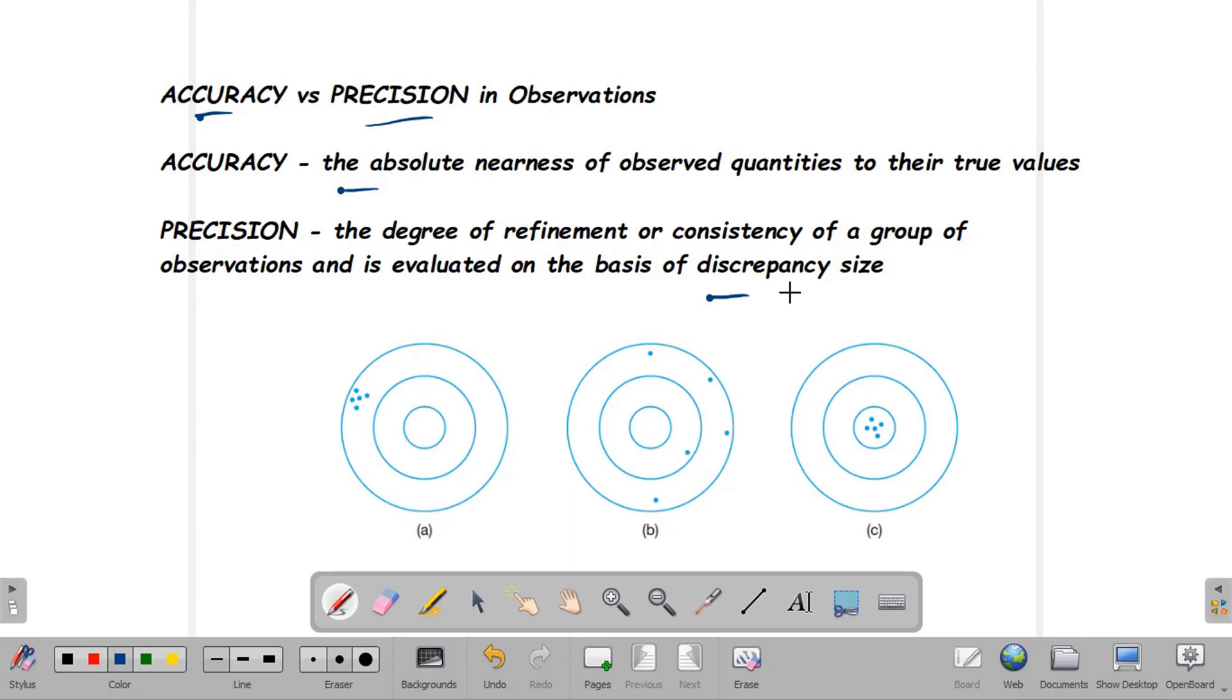Discrepancy is the difference between two quantities. If there is a very small discrepancy, that means there are smaller errors. Otherwise, if the discrepancy is big, we also expect bigger errors in our measurements.